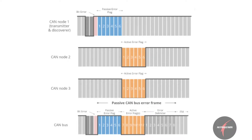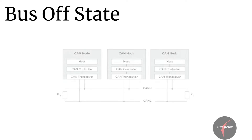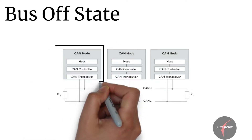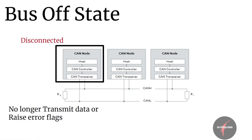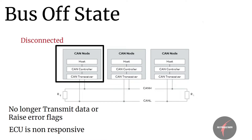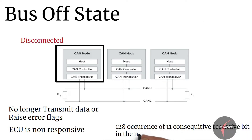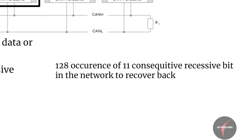Now let's look into the last error state: the bus off state. In the bus off state, the CAN node disconnects itself from the CAN bus and can no longer transmit data or raise error flags. In this state, the ECU is not responsive to messages sent on the bus for some amount of time. The general rule is that the node shall wait for 128 occurrences of 11 consecutive recessive bits in the network to recover back from bus off — a rule established considering the robustness of the network.